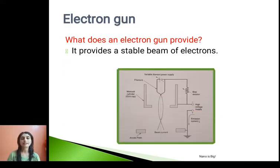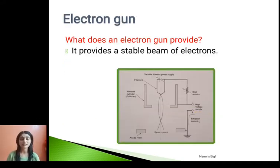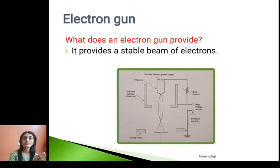So what does an electron gun provide? An electron gun basically provides a stable beam of electrons — you can say it is the source of electrons.